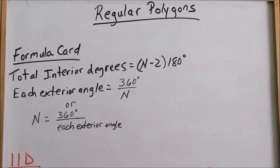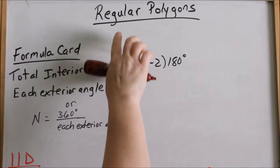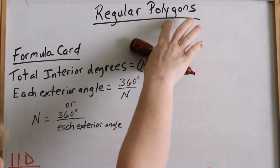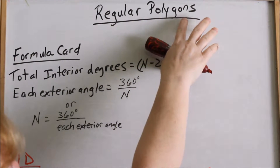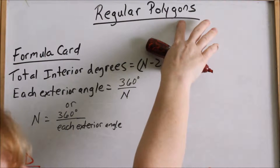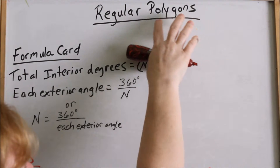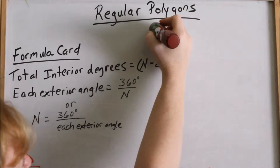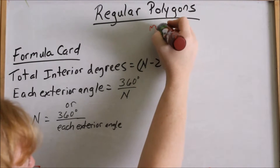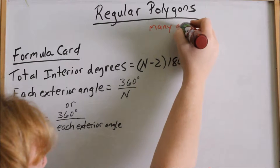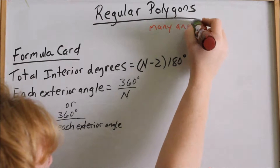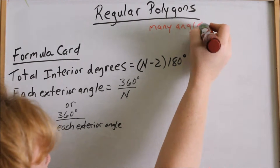This is lesson 11 and we're going to be talking about regular polygons. 'Gons' means angle, 'poly' means many, so this term means many angles.